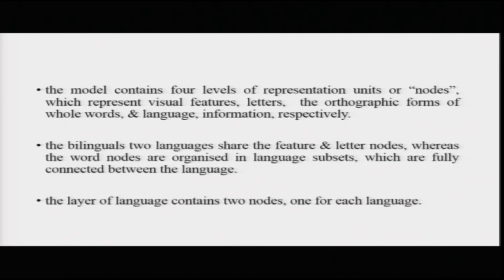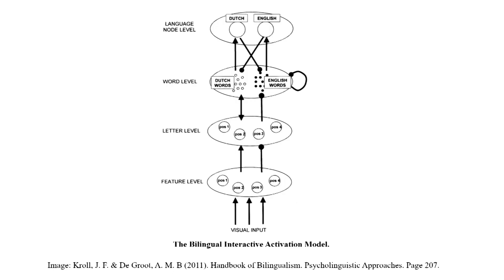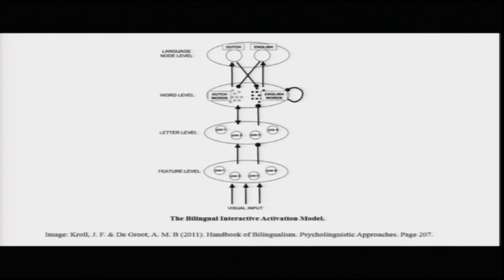This model is also found to simulate the monolingual behavioral data that McClelland and Rumelhart had for their interactive activation model. It has four levels of representations: feature level, letter level, word level, and the language membership level. The bilingual's two languages share the feature and letter level nodes — for example, Dutch and English have very similar orthography and shared letters, so there is no differentiation with respect to language membership at the feature and letter levels. However, from the letter level upwards, you know which are English words and which are Dutch words.